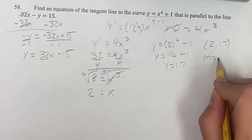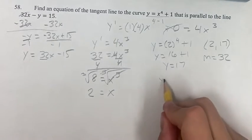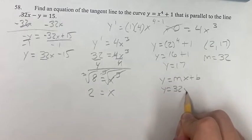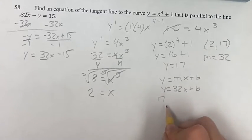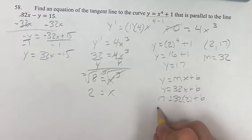And the slope is 32. So, now this is something that we can find the equation of. If we have y equals mx plus b, we know that m is 32. So, y equals 32x plus b. And we know this point. So, we have 17 plugging in for y equals 32 times 2 plugging in for x plus b.